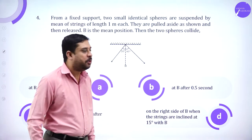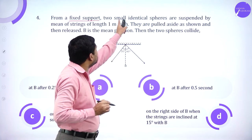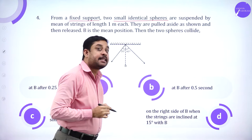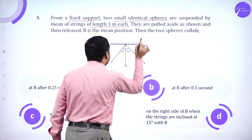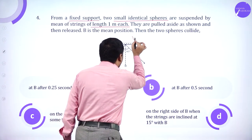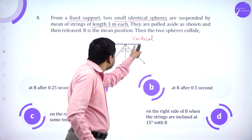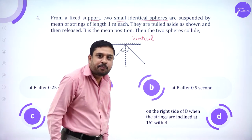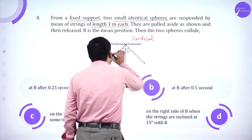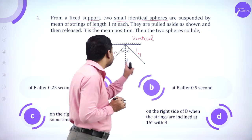Next — a very beautiful problem. From a fixed support, two small identical spheres are suspended by strings of length one metre each. This is the fixed support, and from it we have suspended two identical spheres whose string length is one metre each.